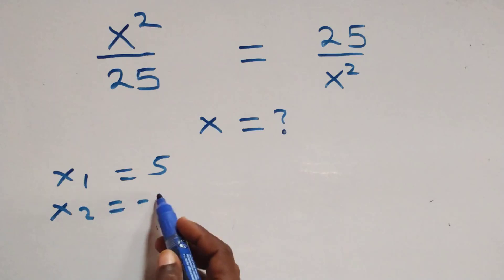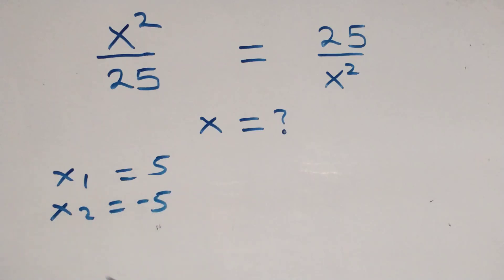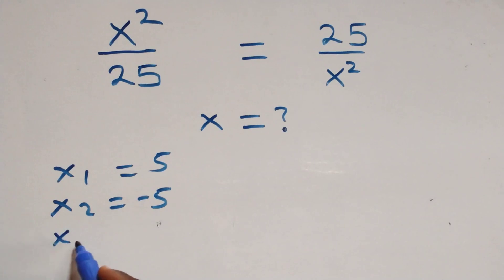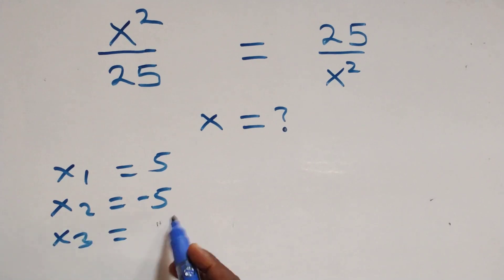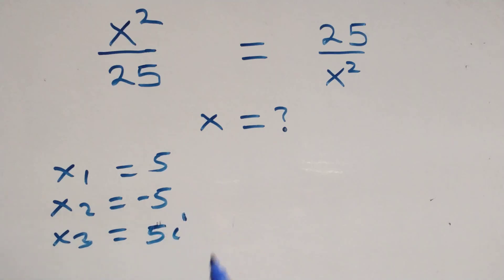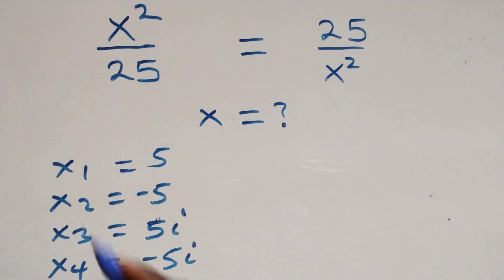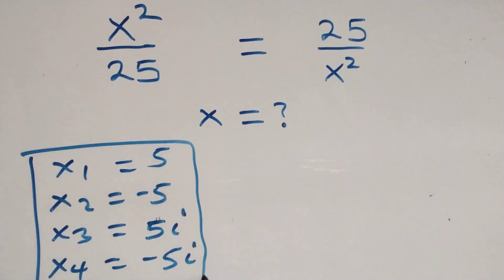Writing all solutions together: x₁ = 5, x₂ = −5, x₃ = 5i, and x₄ = −5i. That is 4 solutions — two real and two complex. Now let's check if these satisfy the given problem.